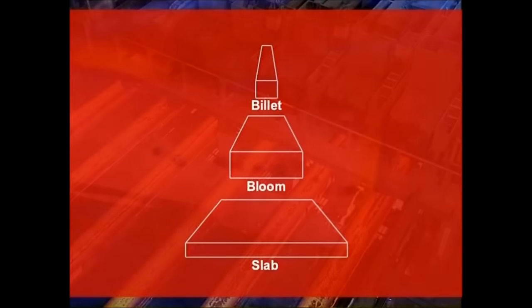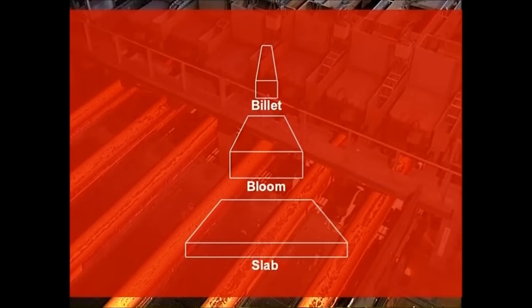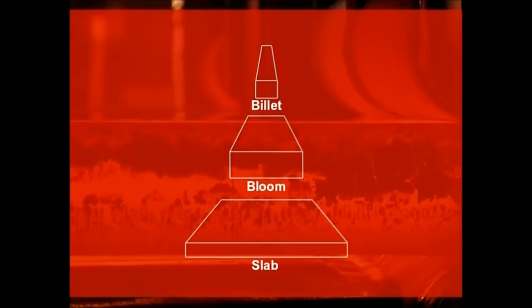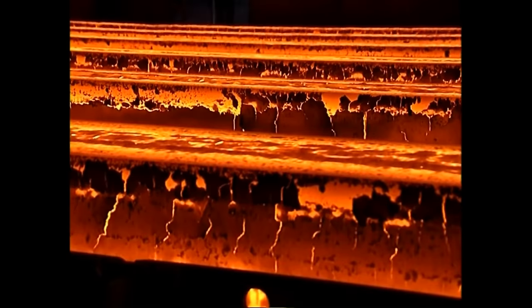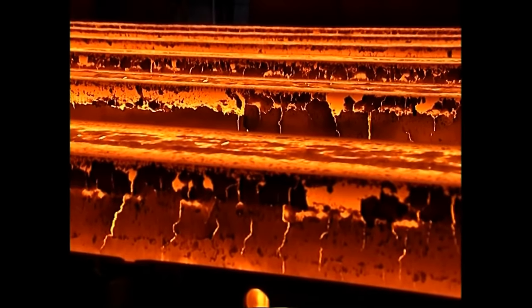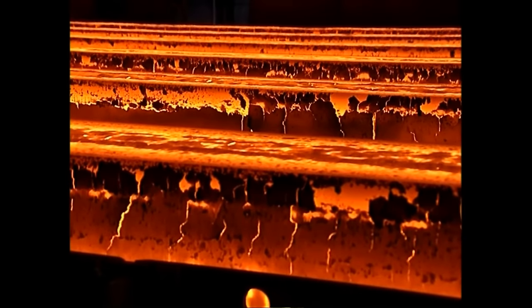Depending on their size, these solid shapes are called billets, blooms and slabs, and are now ready for shaping into finished products.